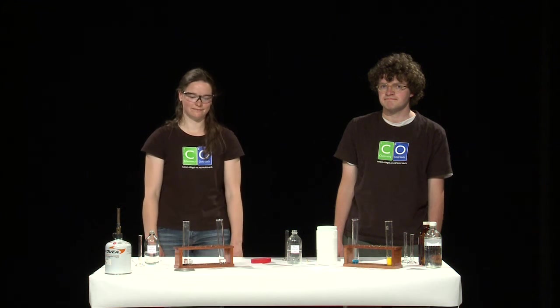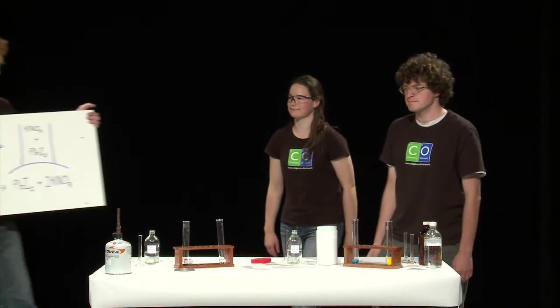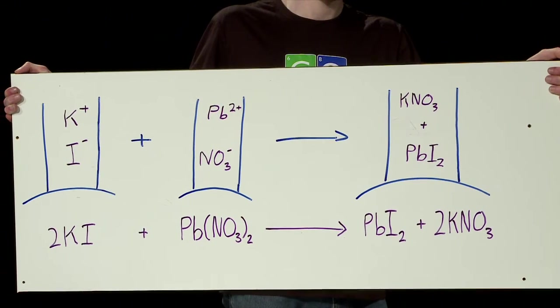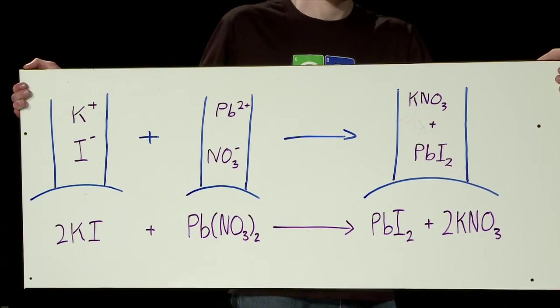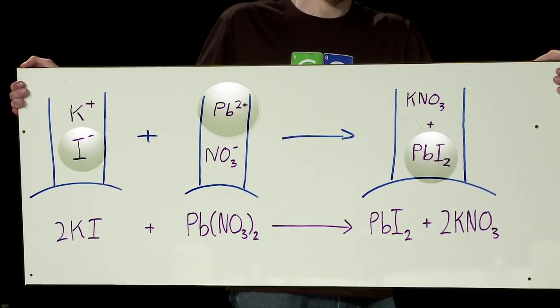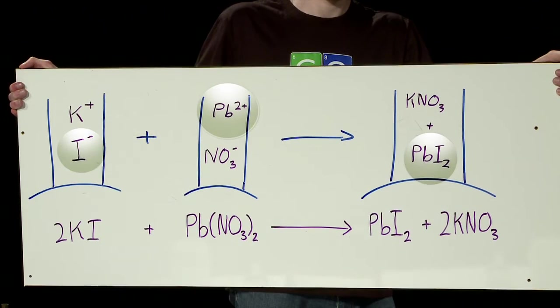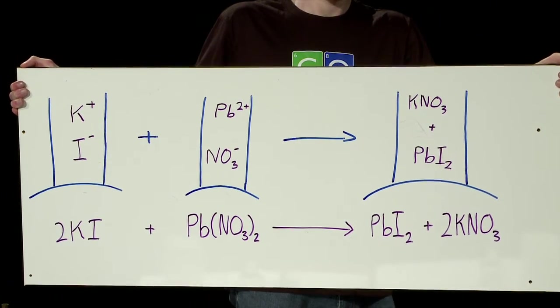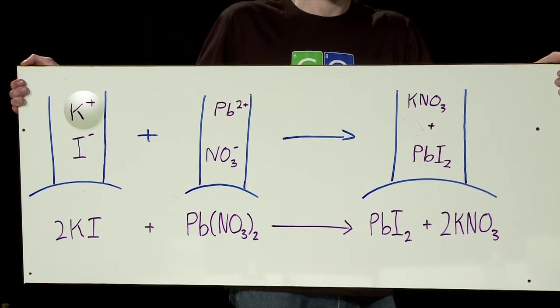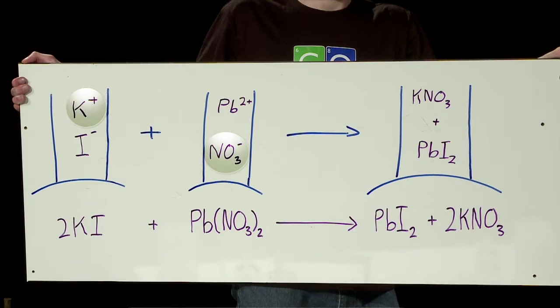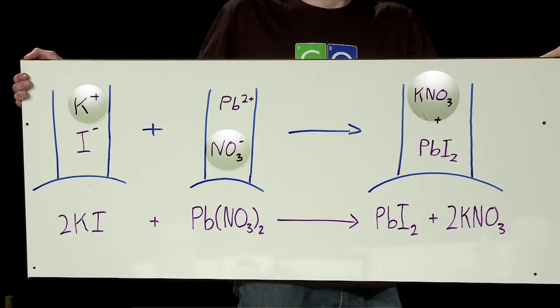So where did this yellow solid come from? Let's take a look at the chemical reaction to find out. So when the two solutions are mixed together, the particles of lead and iodide can react together to form lead iodide. Since the lead iodide is not soluble in water, it crashes out of solution to form a yellow solid. The potassium and nitrate particles can also react, but since potassium nitrate is soluble in water, they remain in solution.